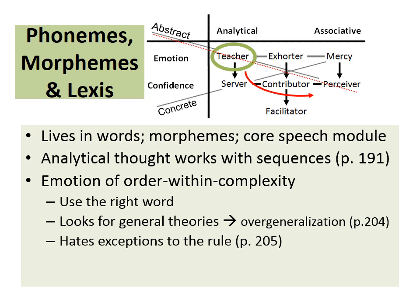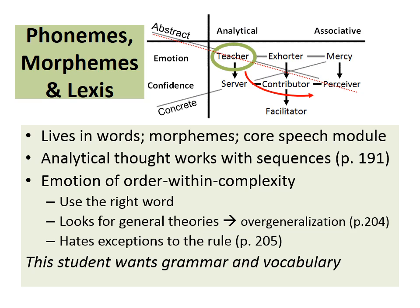Slobin noted that children learning grammar avoid exceptions to the rule — they assume that rules apply everywhere. The teacher person, who is fairly rare, wants grammar and vocabulary when studying language. He wants to know the rules and have a vast vocabulary so he can say everything using precisely the correct terms — in other words, to speak efficiently.